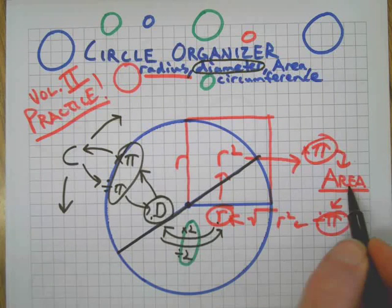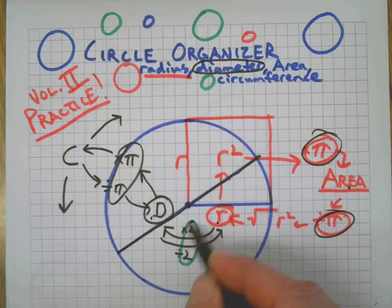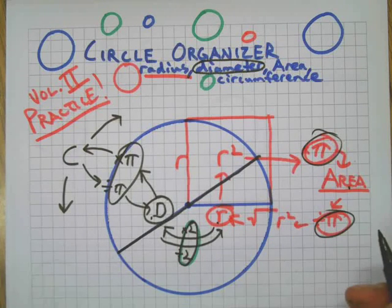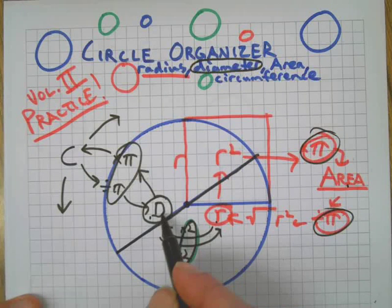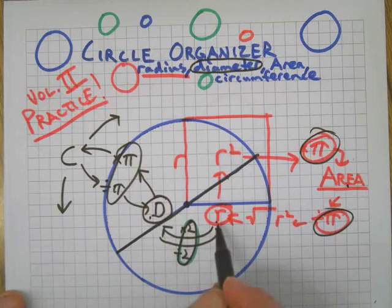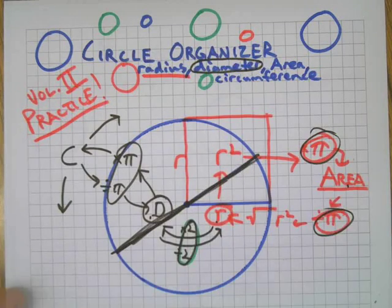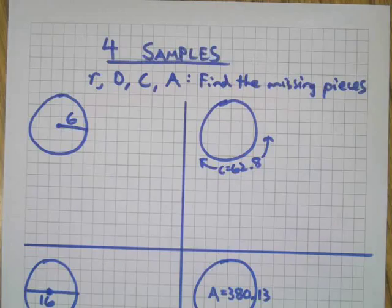And radius connects to area also using pi. We jump back and forth between the two worlds with the number two. We either need two radii to make a diameter, or we're going to cut a diameter in half to get the radius. That's how we get back and forth between the two worlds.